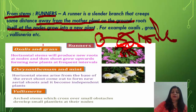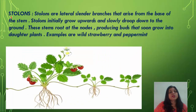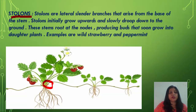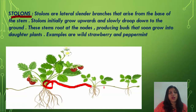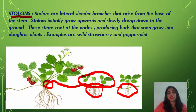Stolons are lateral slender branches that arise from the base of the stem. Stolons initially grow upwards, then slowly drop down to the ground, rooting at the nodes and producing buds that grow into daughter plants. Examples are wild strawberry and peppermint.